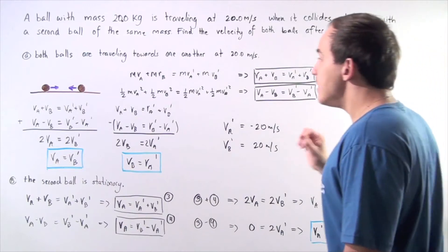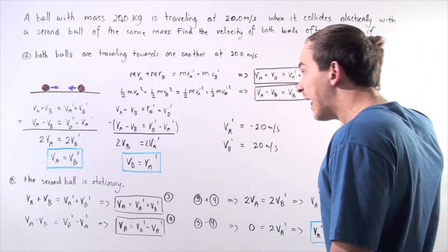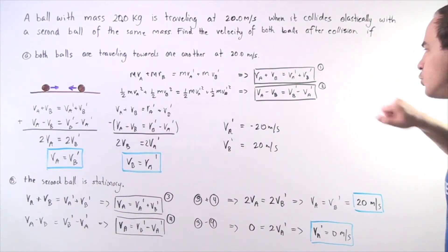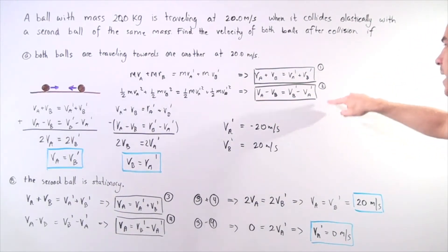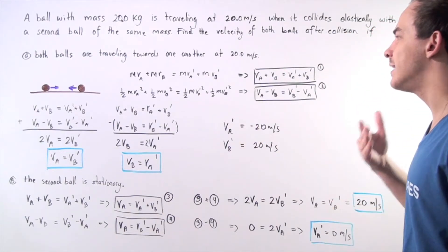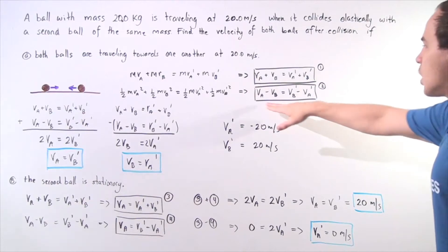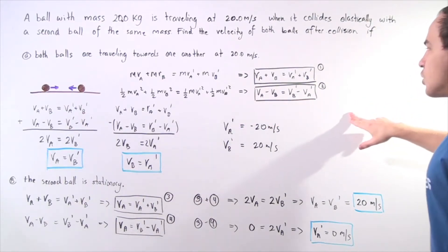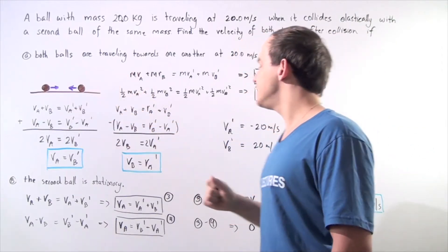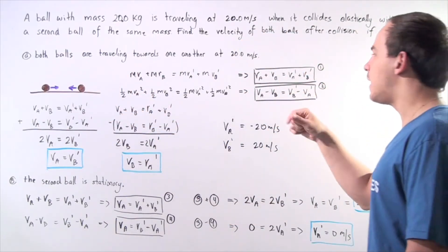If we rearrange these two equations and do a bit of algebra, we get equation two. If you're uncertain about how to derive this, check the previous lecture on elastic and inelastic collisions. The result is that the difference of the initial velocities equals the negative of the difference of the final velocities.